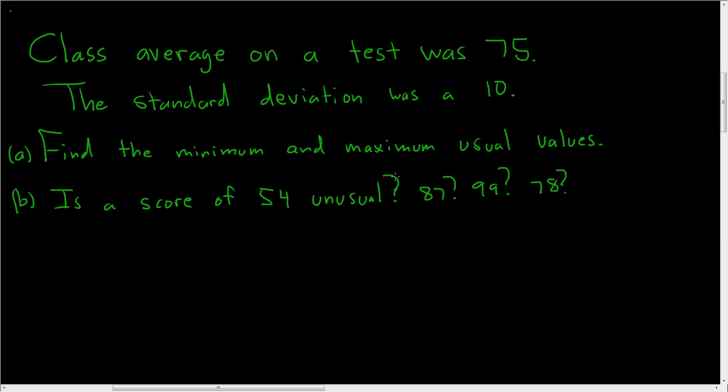The class average on a test was 75, so the average, this will be our x-bar, that's our sample mean. The standard deviation was 10, this will be our sample standard deviation, so that's s.